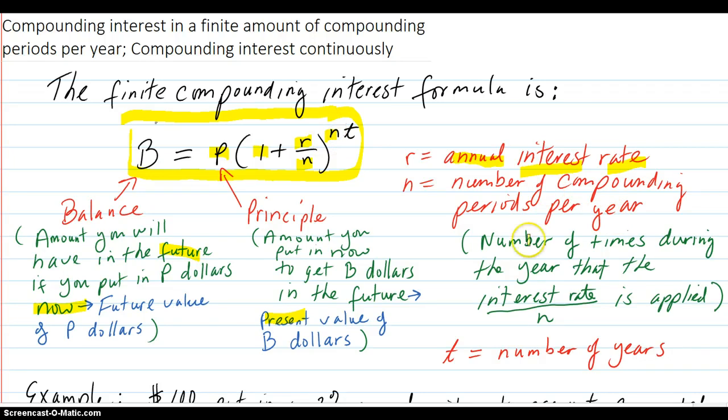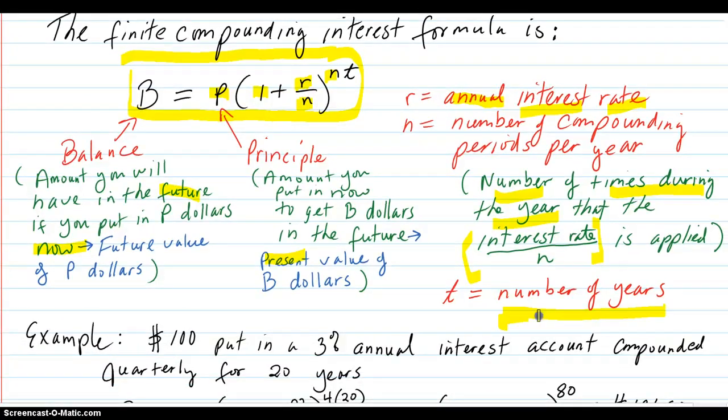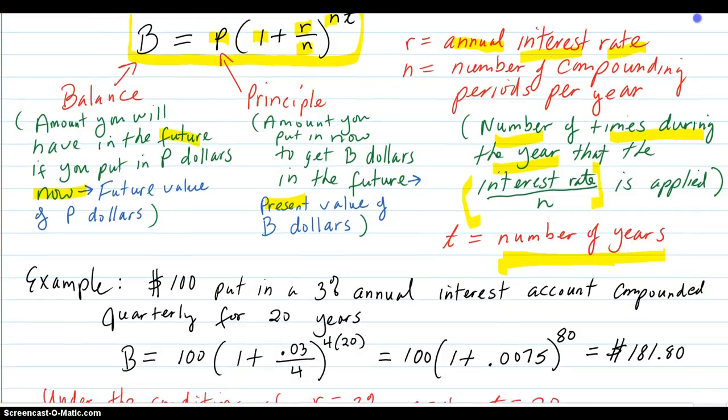N is the number of compounding periods per year. And that is the number of times during the year that the interest rate divided by N is applied to the amount you have at that moment. And of course T is the number of years that you have the money in the account.